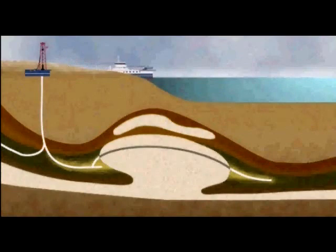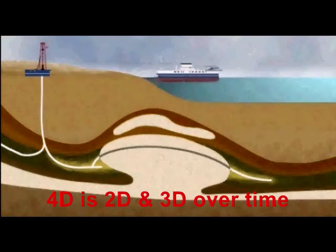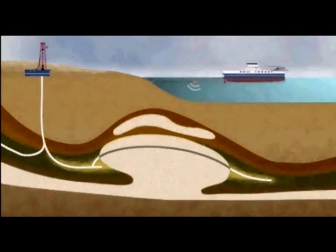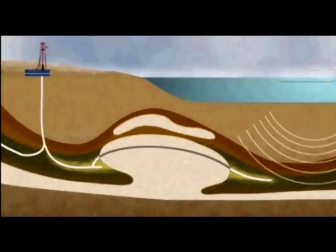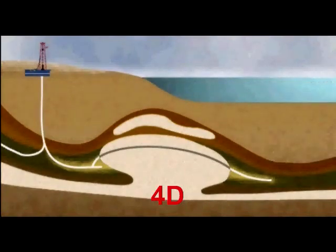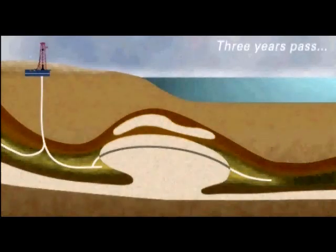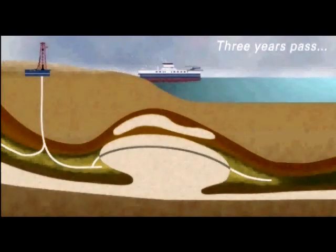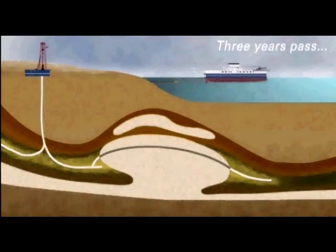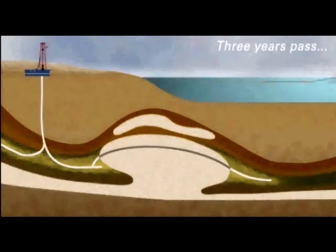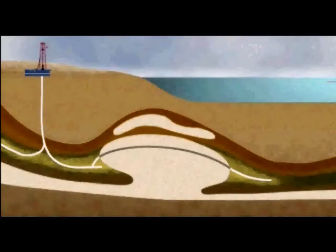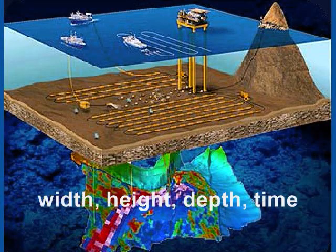In 4D maps, we compare 2D and three-dimensional maps over time. For example, here we have a producing field with its pertinent data represented in an image. In 4D, we look at that same field three years later — maybe after we have extracted oil from the formation — and compare the available data to see if there have been any changes over time, and if so, what those changes are. We also look for changes that can help predict future production forecasts. Therefore, in 4D, we have width, height, depth, and time.